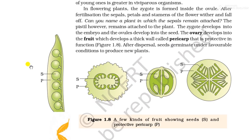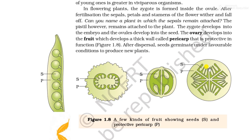In the figure, S shows the seeds and P shows the pericarp. The circular structure represents the seed and the outer structure is the pericarp. This is shown in two diagrams illustrating the seed enclosed within the pericarp.